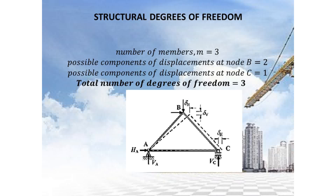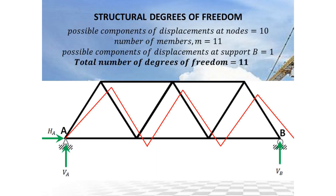As discussed during the Google Meet, structural degrees of freedom pertains to the displacement of your structure. Looking at this example again — the red you see is the exaggerated deflection for this truss — the possible components of displacement at nodes need to be counted.